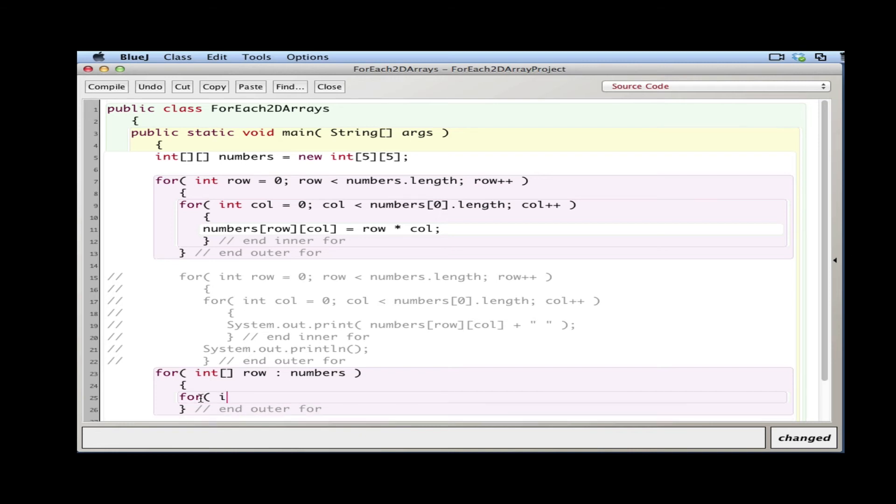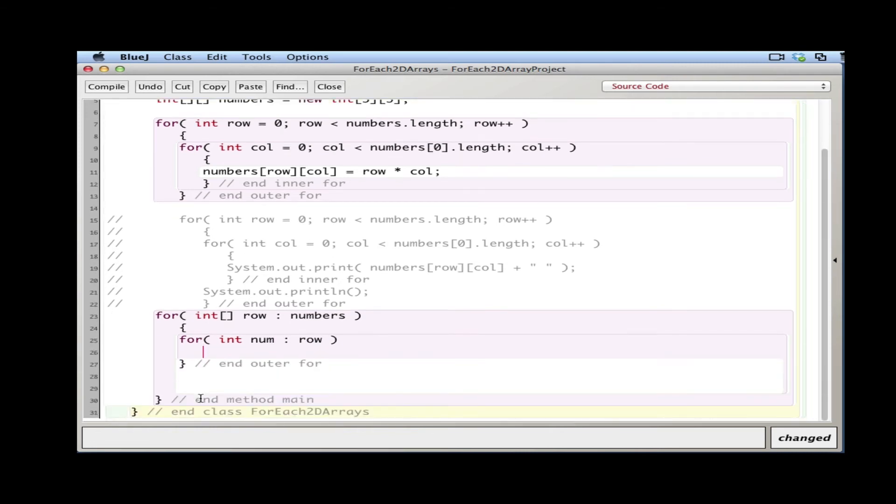I'm going to say for each int, I'll call it num, in the row, which of course is a single dimension 1D array. Okay, I'm then going to, and inner for, I'm going to print out that actual integer: System.out.println.